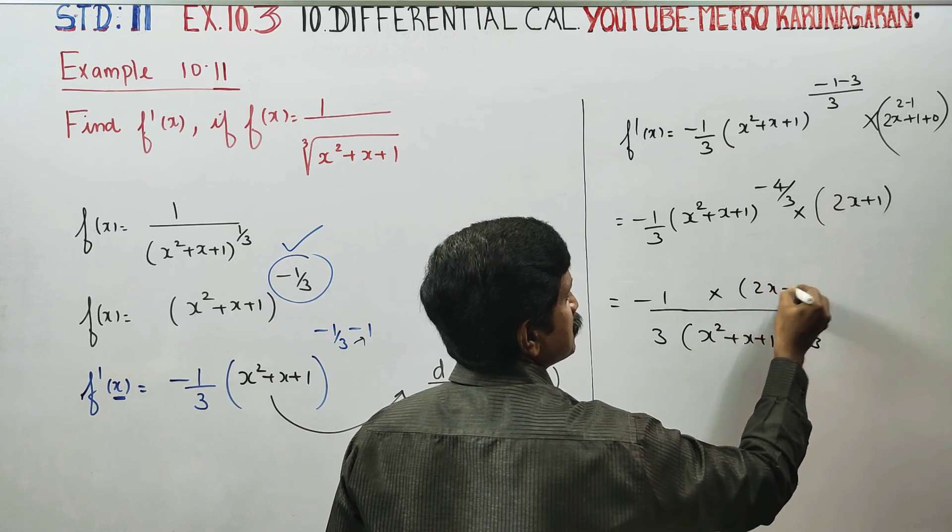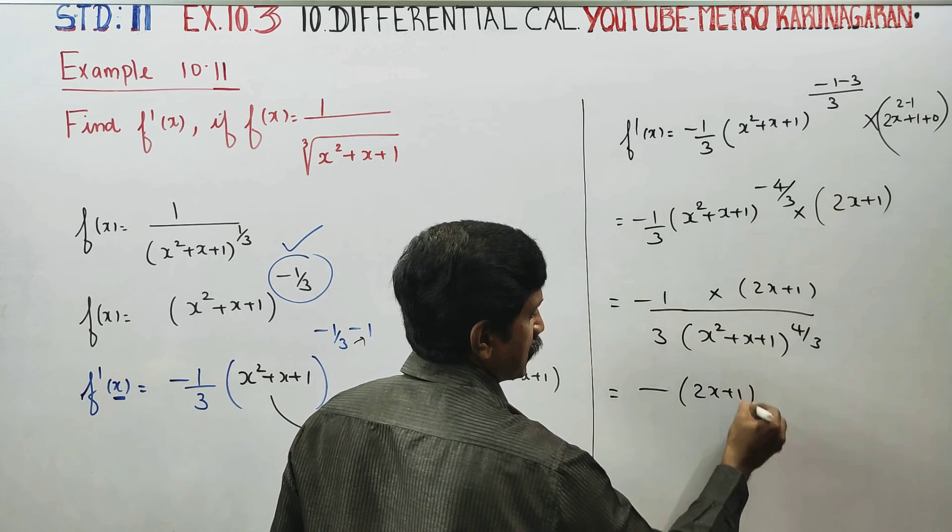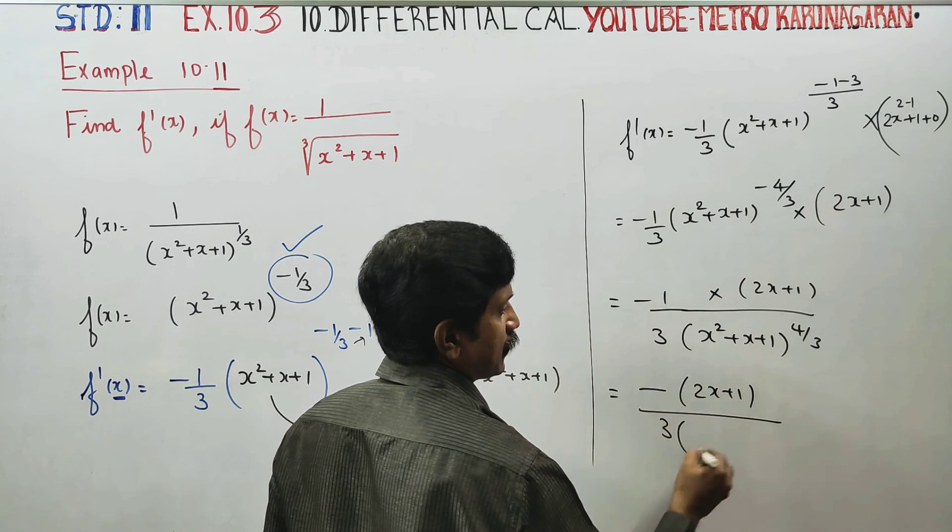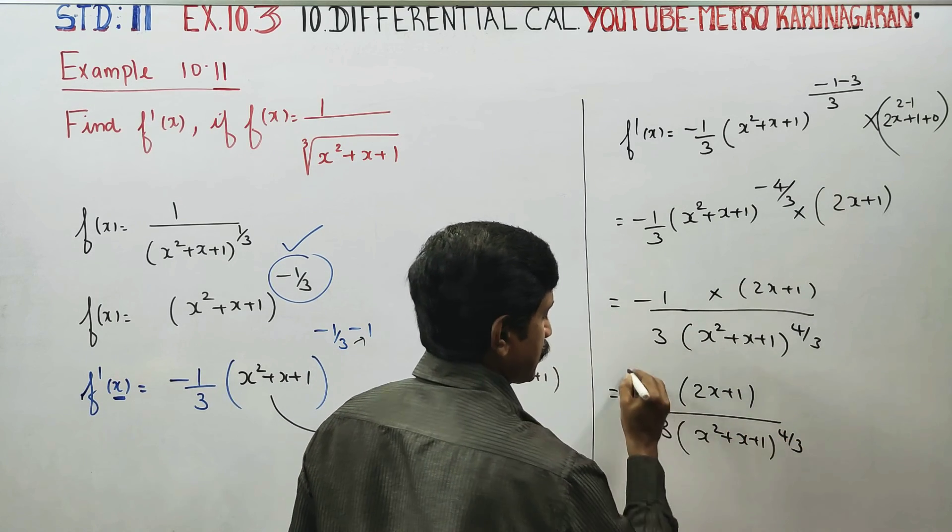So minus 2x plus 1 by 3 into x square plus x plus 1 over power 4 by 3.